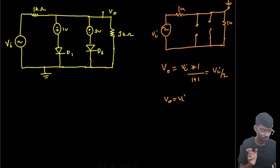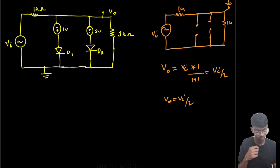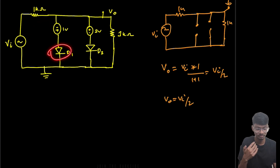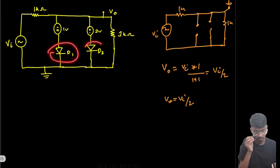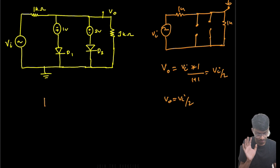Now we need to find the conditions at which D1 or D2 turns on. At the positive half cycle, the positive voltage comes around D1, so there is a possibility of D1 turning on. Let's first assume both D1 and D2 are on and see what happens when we replace the diodes with their equivalent cut-in voltages.